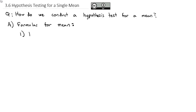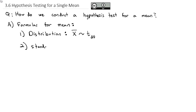For the mean, because we don't know the population standard deviation, the distribution of the mean is a t-distribution with degrees of freedom one less than the sample size. The standard error is equal to the standard deviation of the sample divided by the square root of n.